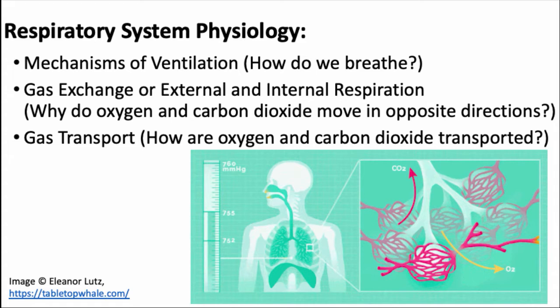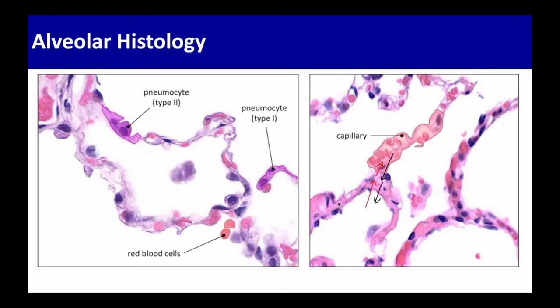We can break that down into three basic questions. First, how do we breathe? By breathing, I mean how does atmosphere move in and out of our body — that's ventilation. The next question is why do these two gases, oxygen and carbon dioxide, that are so important, move in opposite directions? That takes us into gas exchange, which is either internal or external respiration depending on where in the body it's happening. And finally we're going to talk about how oxygen and carbon dioxide are transported through the body.